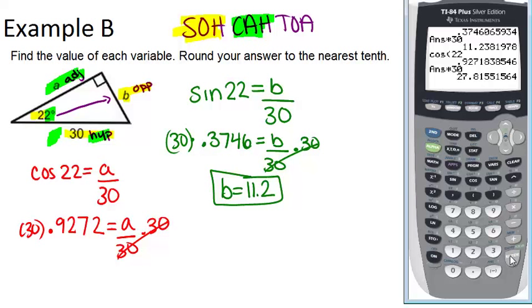And I get 27.8. So A equals 27.8, rounded to the nearest tenth.